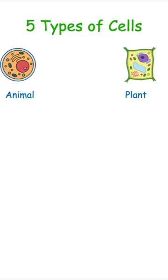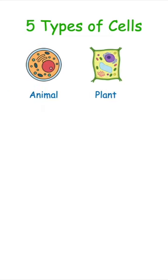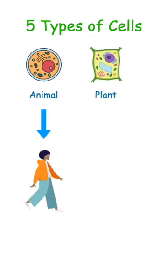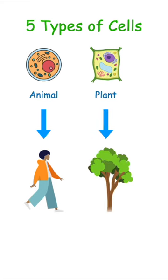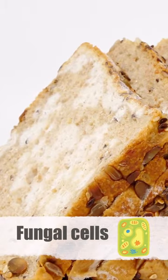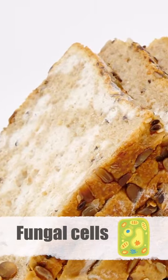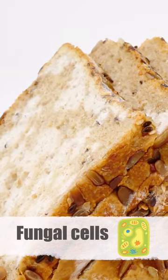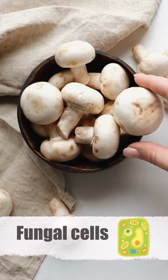Animal and plant cells don't need an introduction. You are made of animal cells and trees have plant cells. Fungal cells are the mold that grows on your food, and all mushrooms are made of fungal cells.